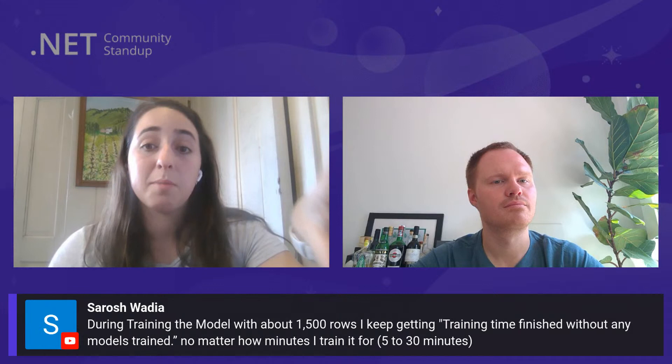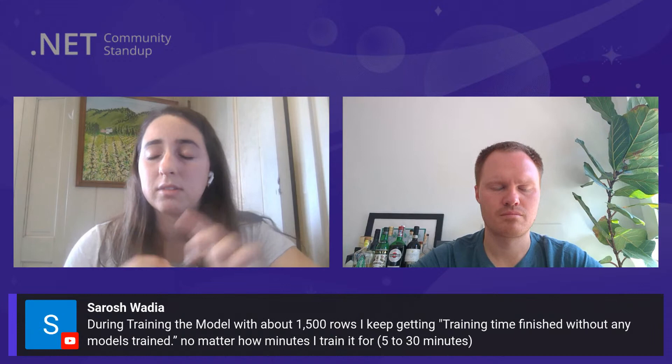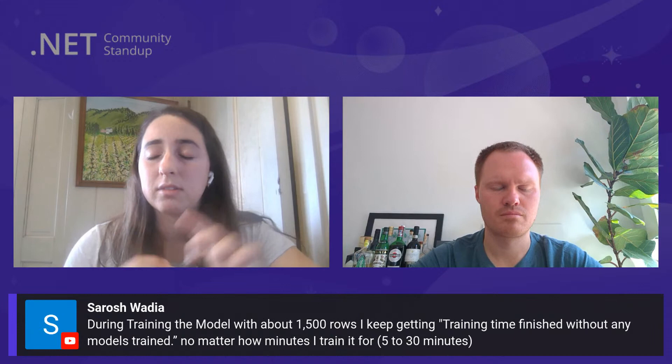It looks like the dataset is similar to the GitHub issues sample — some sort of classification similar to that. Like Jake said, it could be an error we didn't catch and didn't surface in the UI. It could be that there's not enough data, or it's an unbalanced dataset — maybe you need more of each class category. It also might have a lot of columns or a lot of different categories to classify against. It shouldn't take that long for 1,500 rows — seems like either it's an uncaught error or the dataset isn't quite ready.